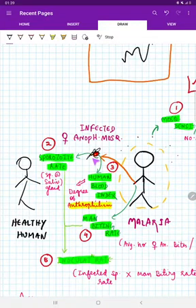Next is human blood index. Human blood index means the blood which is taken from the human, the fresh blood which is taken by the mosquito from the human. It shows the degree of anthrophilism.